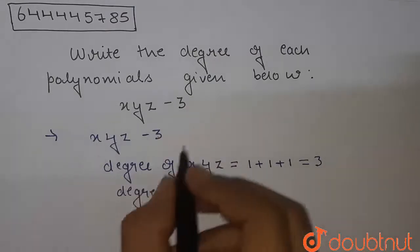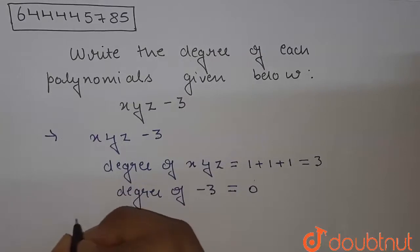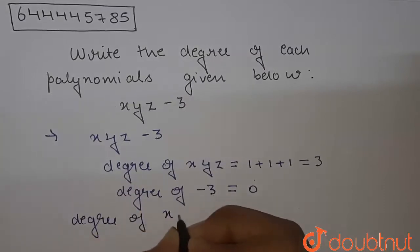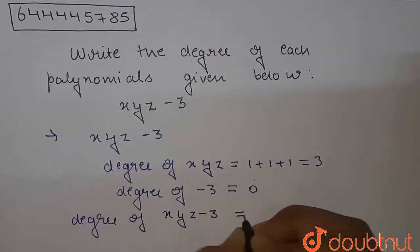Right, so the degree of this whole polynomial, the degree of xyz minus 3, is coming equal to 3.